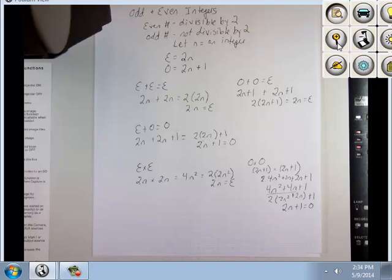So, again, you can try them for yourself. 3 times 5, odd times odd, is 15. Even times even, 4 times 6 is 24, which is an even number.